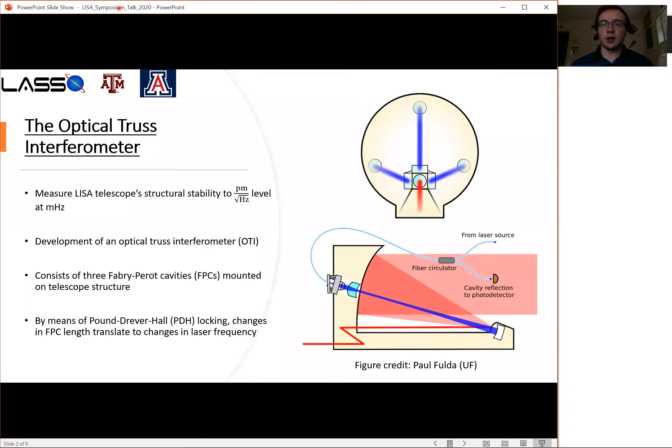The LISA telescope lies directly in the path of the long arm interferometer for LISA, and as such the telescope structural stability has to meet the picometer per hertz level at millihertz frequencies. One way to measure and test this structural stability is the use of an optical truss interferometer, or OTI.